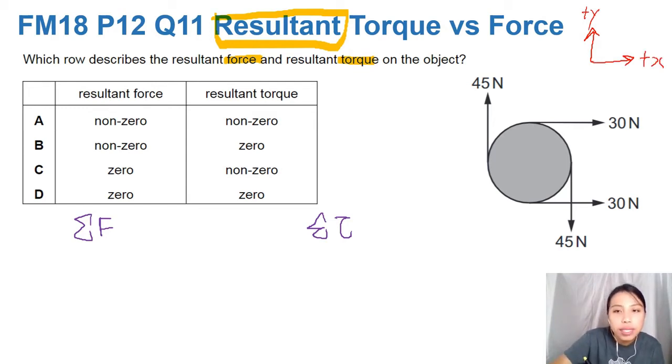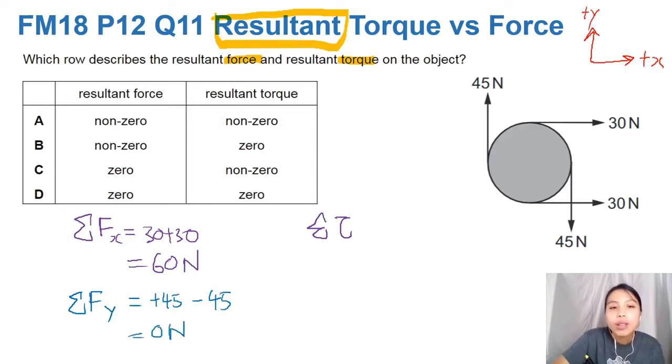So for resultant force in the X direction, will be 30 plus 30. So there is a resultant force in the horizontal direction. How about the vertical direction? So the resultant force in the vertical will then be positive 45 minus 45. So that's 0 newtons. So what that tells us is, your object will accelerate in which direction? Resultant force.